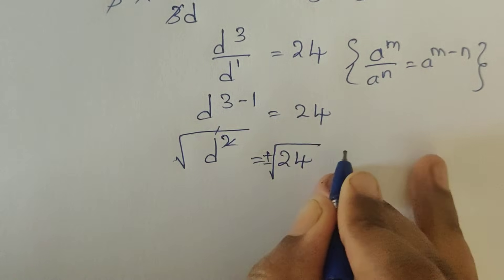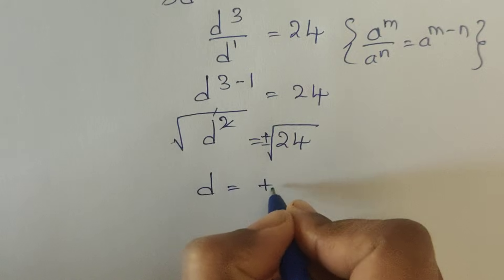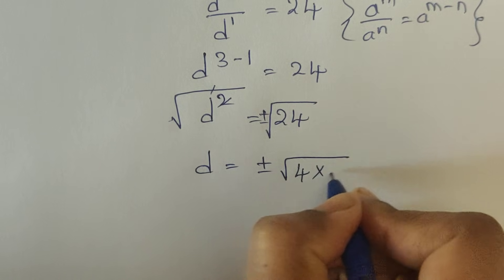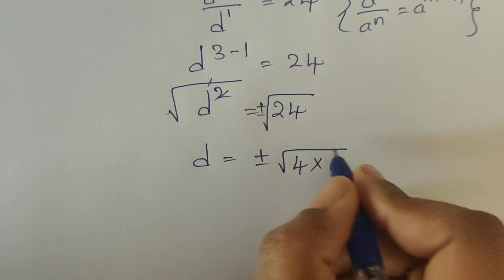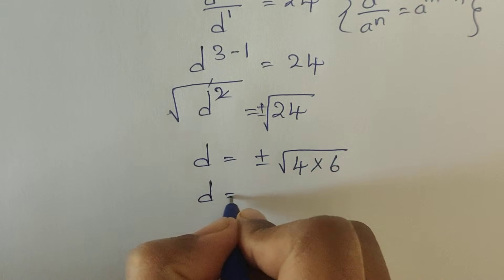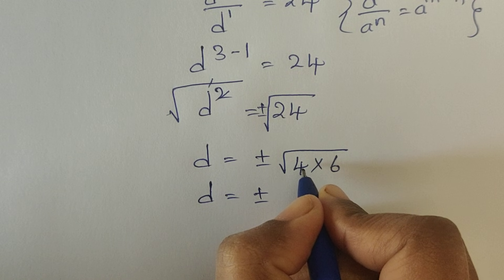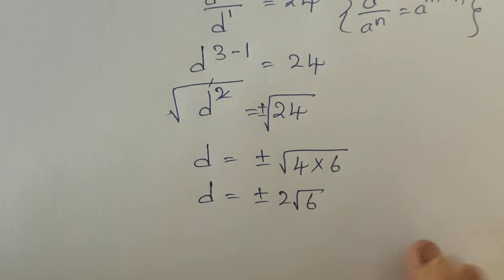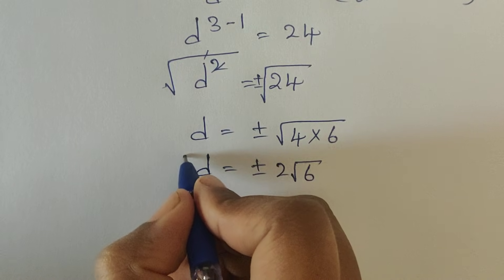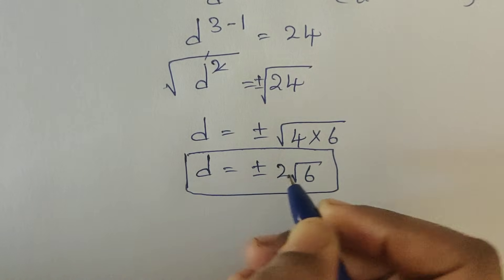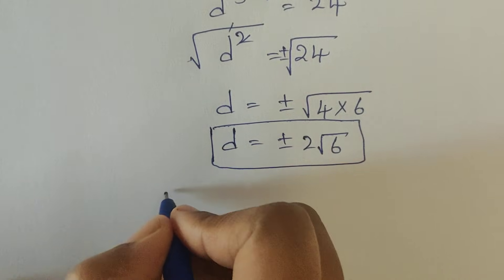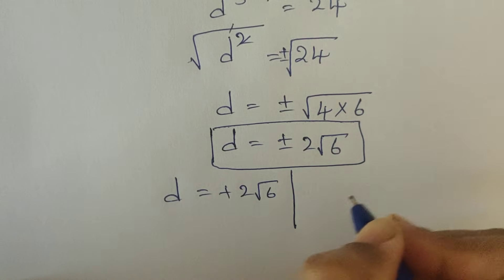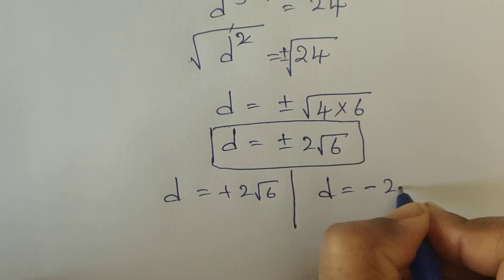Taking the square root of both sides, d squared equals 24, so d equals square root of 24, which simplifies to 2 square root of 6. So this is the value of d. We split the solution into two parts: d is equal to positive 2 square root of 6, and d is equal to negative 2 square root of 6.